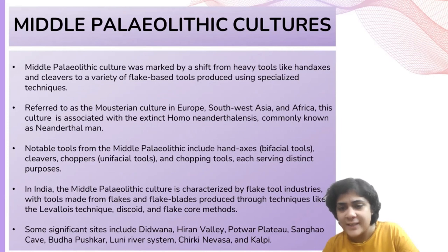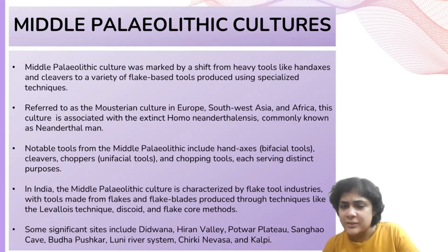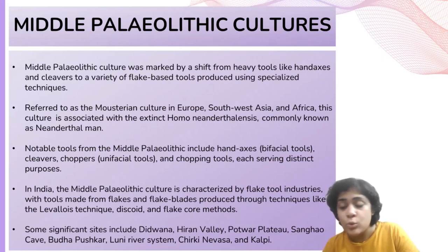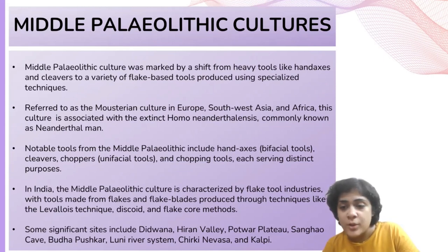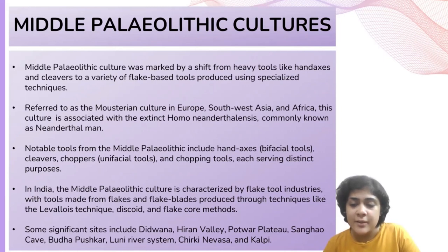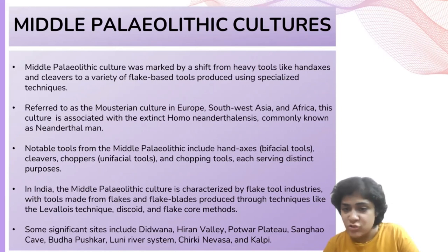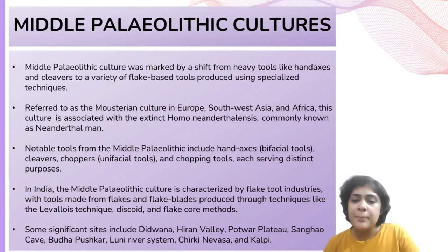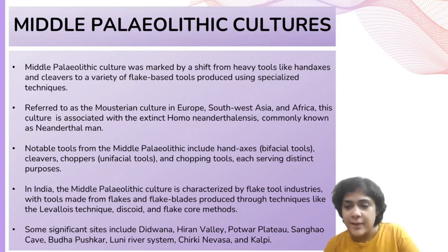The Mousterian industry, a Middle Paleolithic tradition used by Neanderthals in Europe, southwest Asia, and Africa, marked a significant shift from the use of hand axes and cleavers to predominantly flakes. This transition occurred at the end of the Middle Pleistocene. The key development was the ability to produce a complete tool in a single blow from a previously prepared core, ensuring the detached flakes conformed to specific tool patterns. This technique was not only labor and resource efficient but also allowed for versatile tool manufacturing.